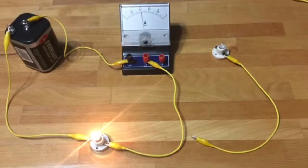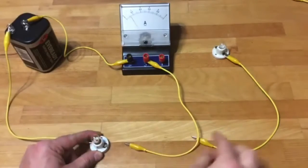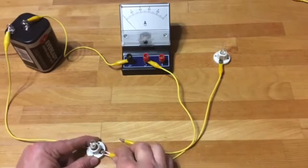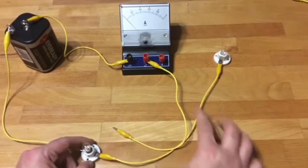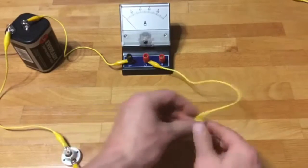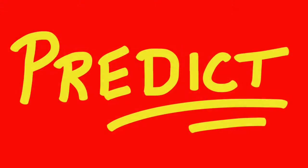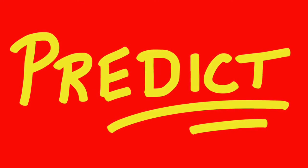This simple circuit has a current of about 0.4 amperes. If I now add a second bulb in series what happens to that current? Go up, go down, or stay the same?